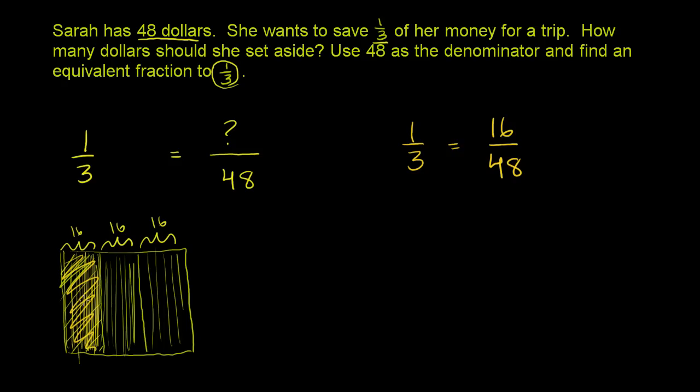Now we did it just by thinking about it kind of intuitively, what 1/3 of 48 is. But one way to do it more, I guess, a process for doing it would say, well look. To get the denominator, the bottom number from 3 to 48, we multiply by 16. 3 times 16 is 48. And that's literally the process of going from 3 pieces to 48 pieces. We have to multiply by 16. We have to turn each of our pieces into 16 pieces. That's what we did.